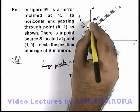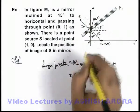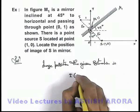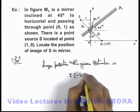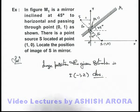The x-coordinate would be −1 and the y-coordinate will be 2, so the image is at (−1, 2). That will be the answer to this problem.